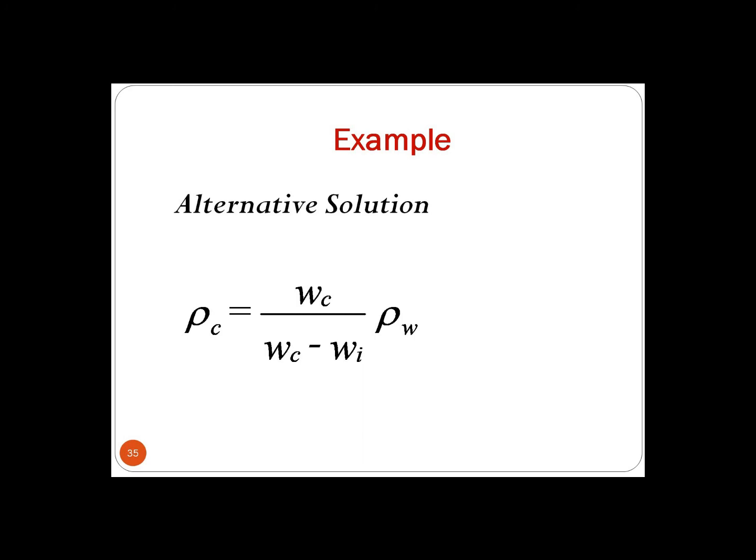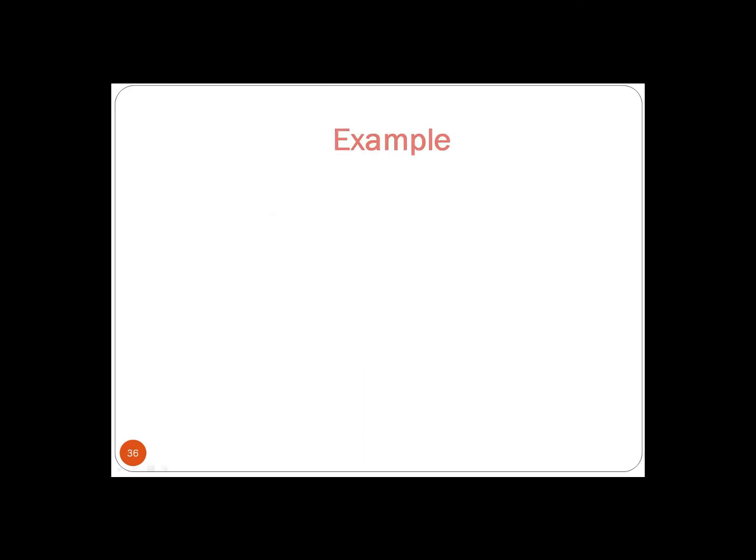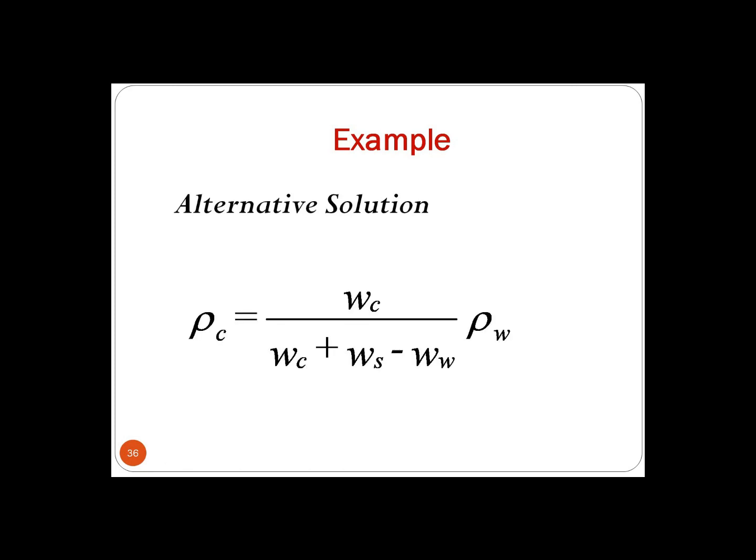Here WI is the weight of the composite when immersed in water. When the specimen floats in water, a sinker must be attached. In this case, the overall density of the composite is found as rho C equals WC divided by (WC plus WS minus WW) times rho W, where WS is the weight of the sinker when immersed in water, and WW is the combined weight of sinker and specimen when immersed in water.